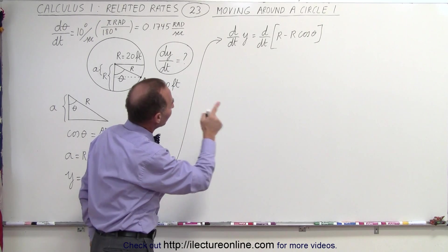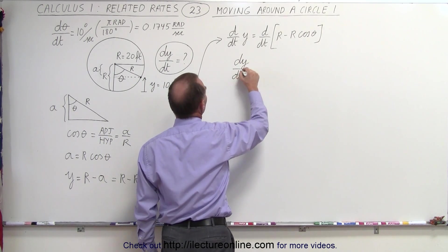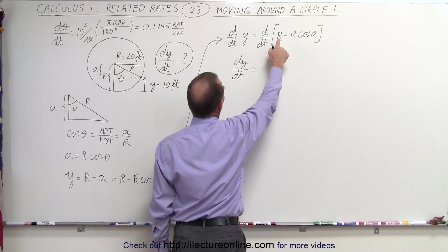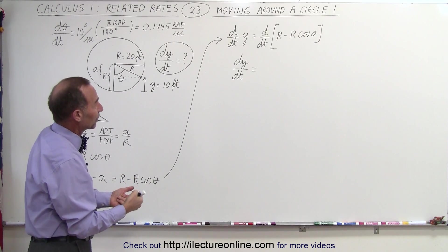Okay, when we do that, notice on the left side we get dy dt. And on the right side, since r is the radius of the circle, and that's going to be a constant, if I take the derivative of that, that's going to be equal to zero. So that means that derivative of this is zero.